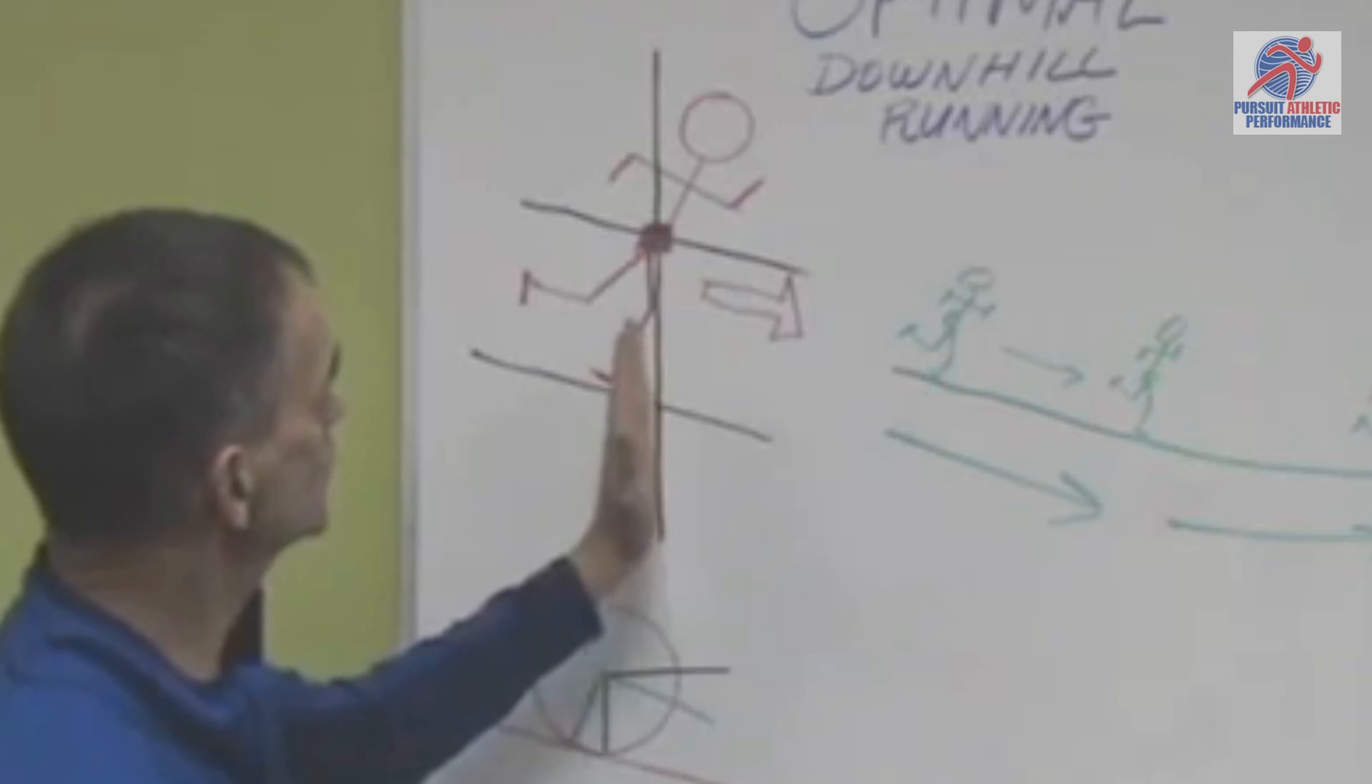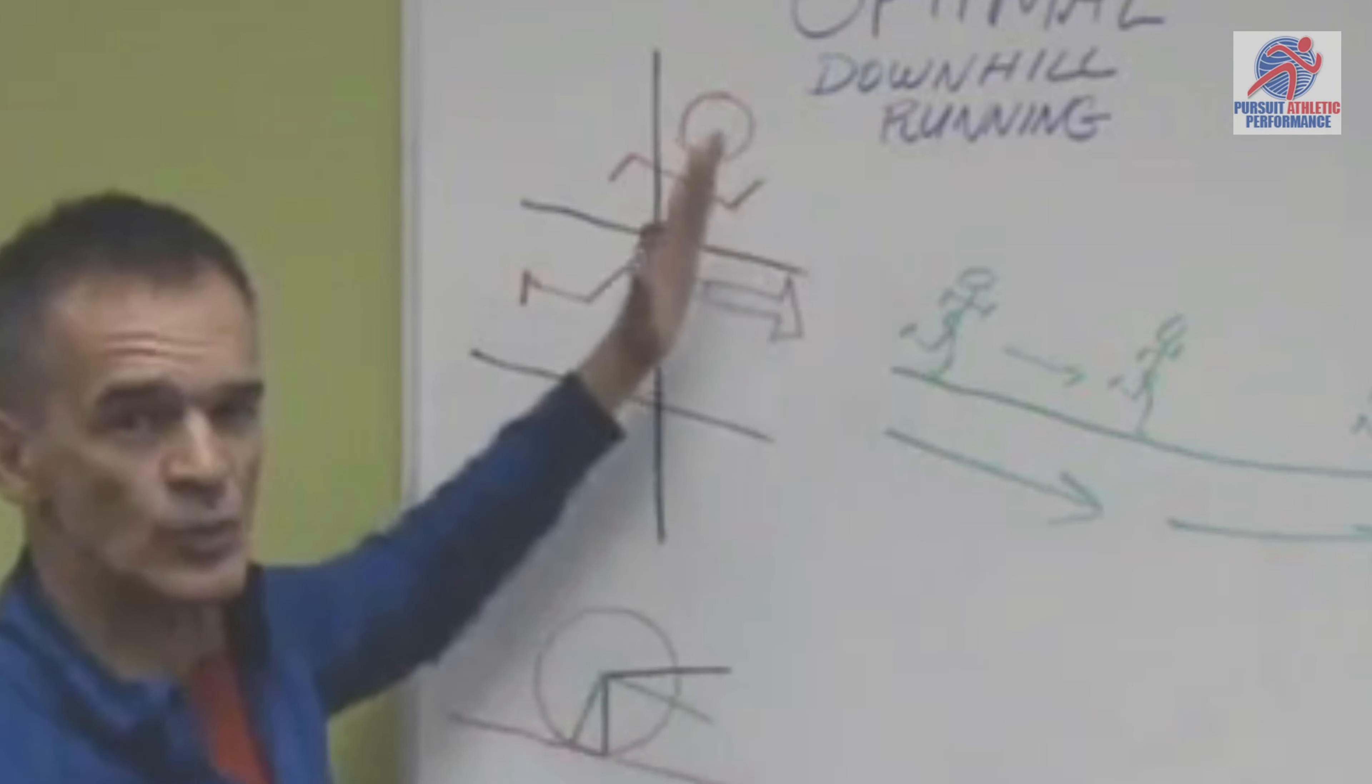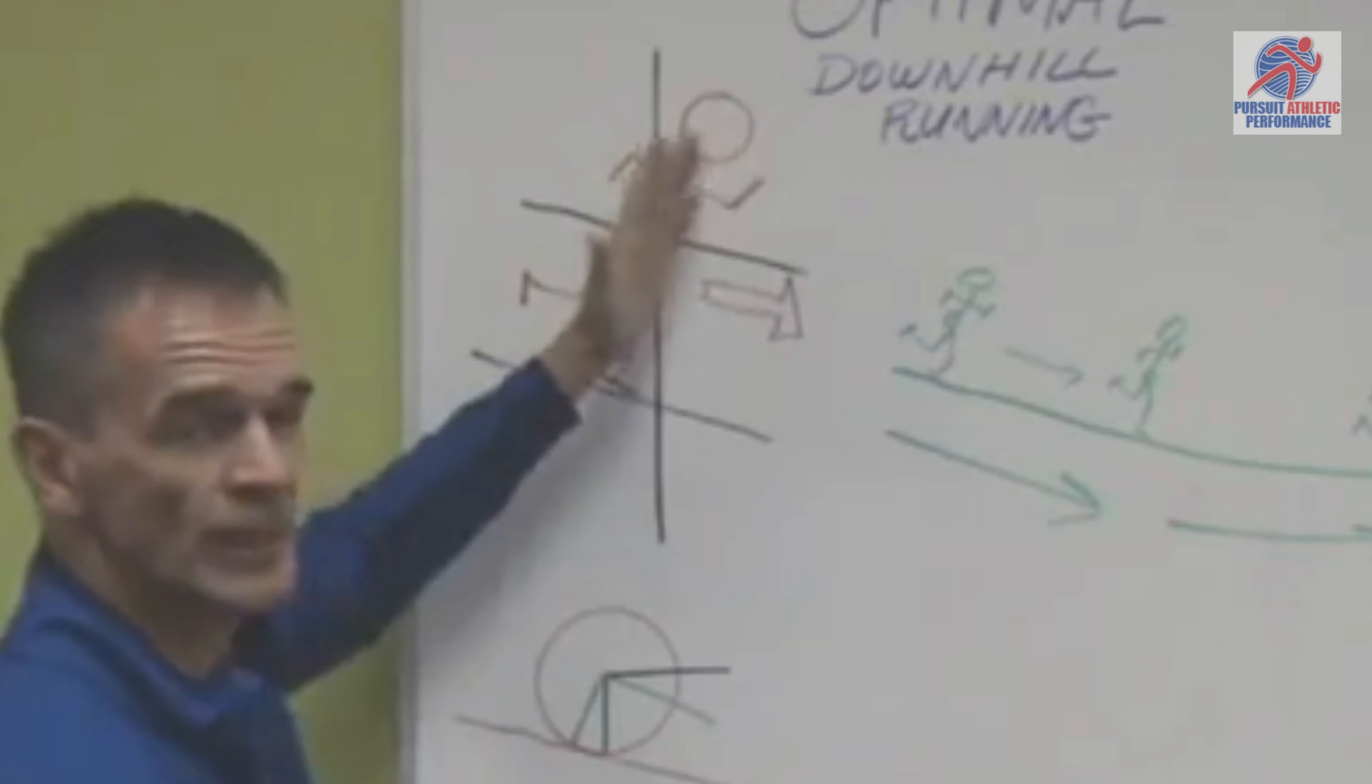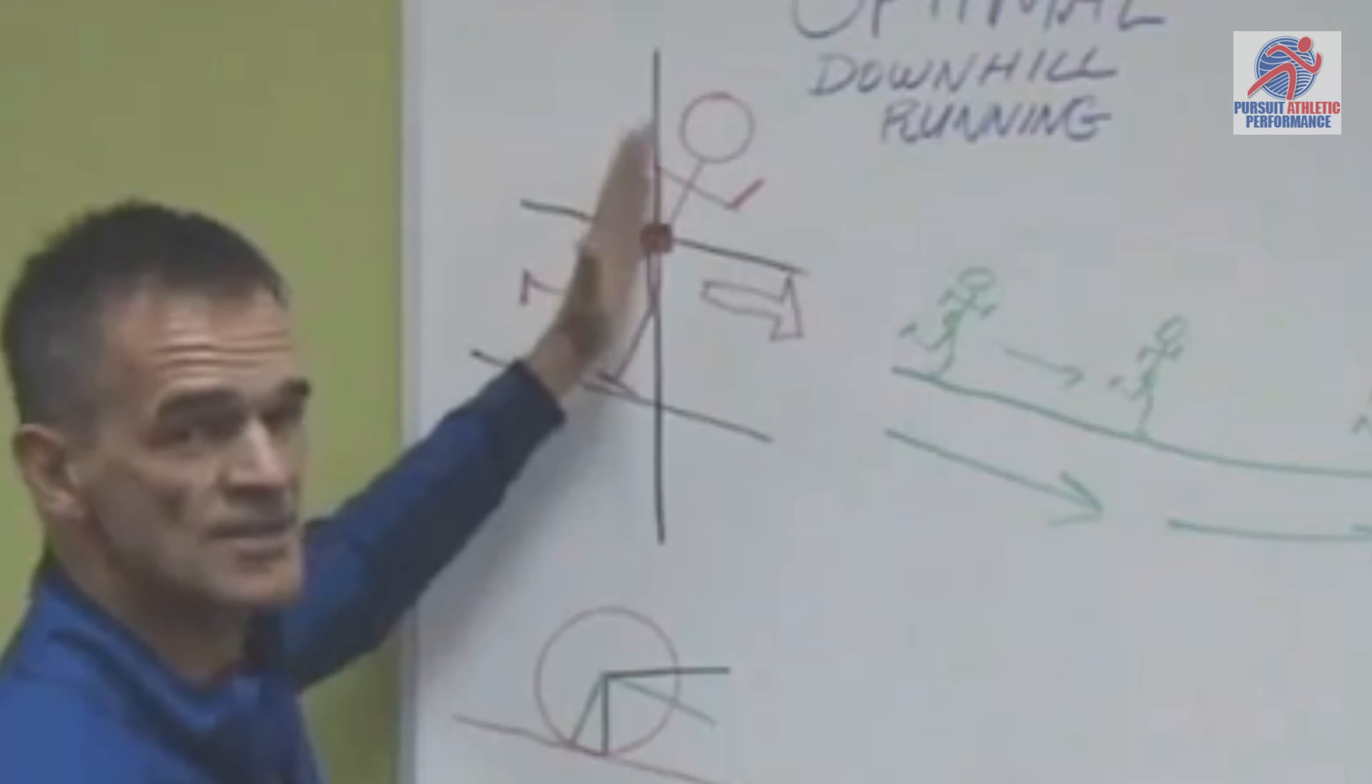So, you can see this line sort of represents a vertical line, and these lines represent that orientation of this runner's body to the downhill slope. As the downhill slope would get steeper, of course, at some point, you're not going to be able to keep your body perpendicular, but for most grades, that is the goal.